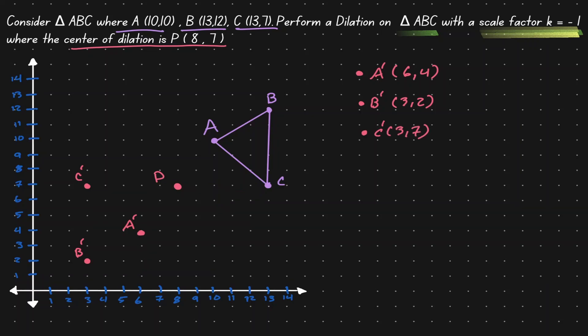Let's clean this up. Now let's connect our coordinate points. Let's understand what we have done here. We got triangle ABC, and then we performed a dilation with a scale factor of negative one, and then we obtained triangle A'B'C'. To accomplish that, we looked at the distance from P to each of the points, and then we went in the opposite direction to obtain the image points.